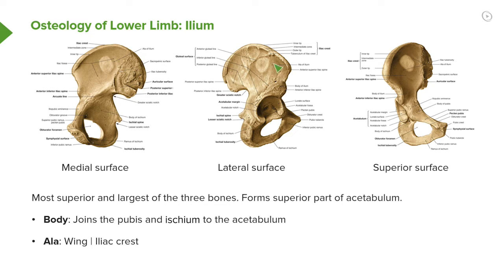Then we have this large wing of the ileum, and we can see two parts of that. We can see the ala here — this large flat surface. And then at the top of this wing, we have the iliac crest. We can see the iliac crest running across, visible on both the lateral and medial surfaces.